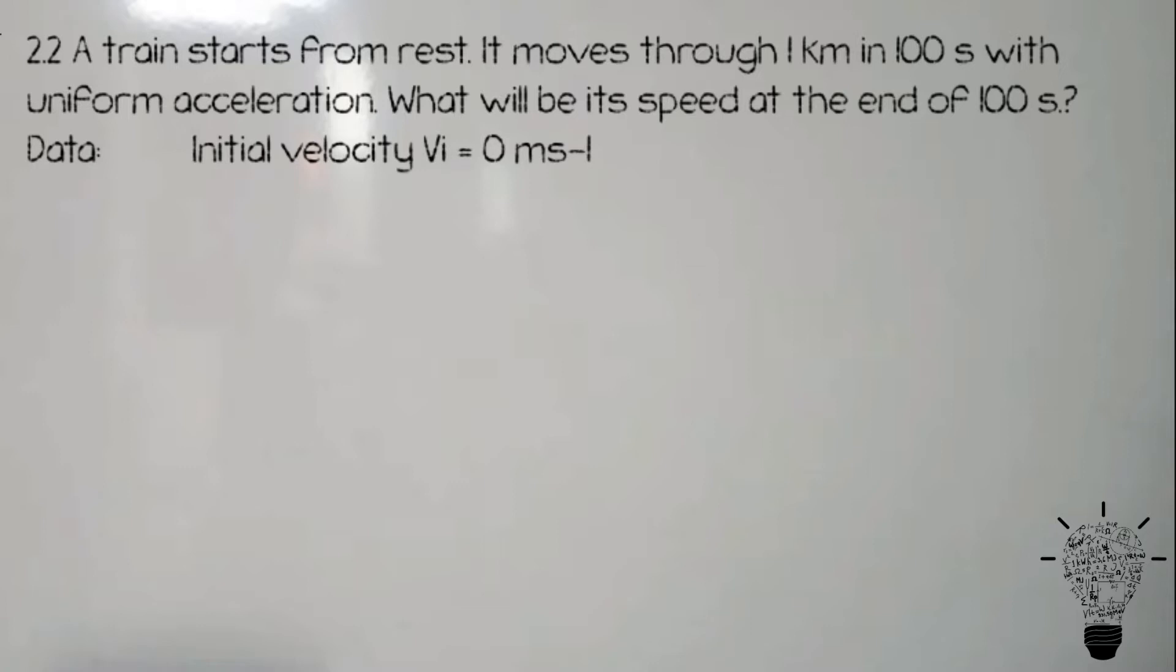Now by writing the data: initial velocity is 0 meter per second, distance is 1 km means 1000 m, time is 100 seconds. These are the values given. We need to find out final velocity.